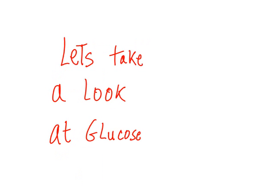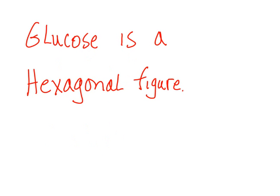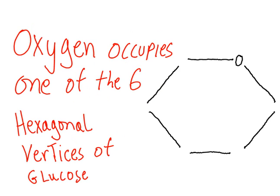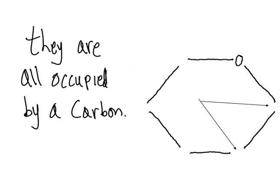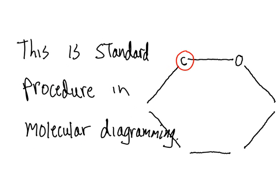Let's take a look at glucose. Glucose is a hexagonal figure. Oxygen occupies one of the six hexagonal vertices of glucose. It is not requisite to label the other vertices, as they are all occupied by a carbon. This is standard procedure in molecular diagramming.